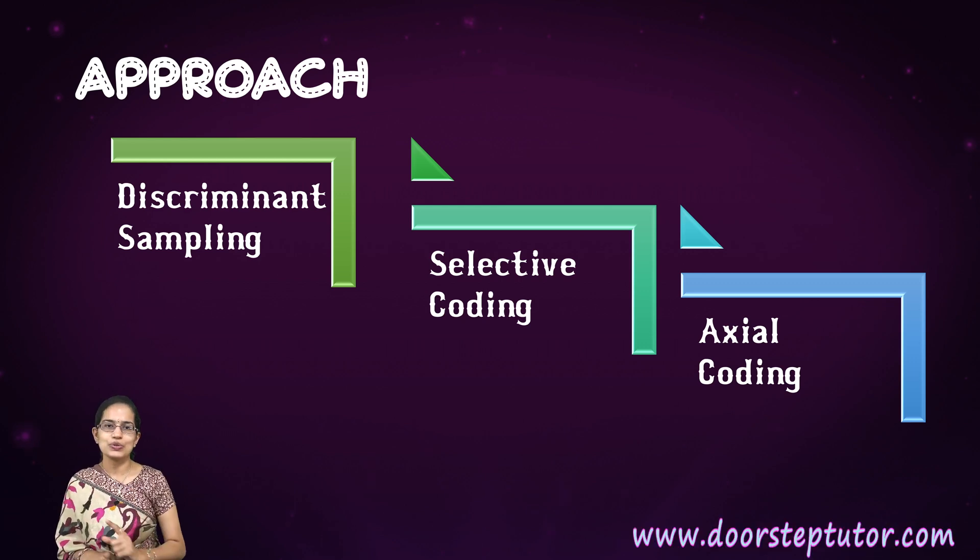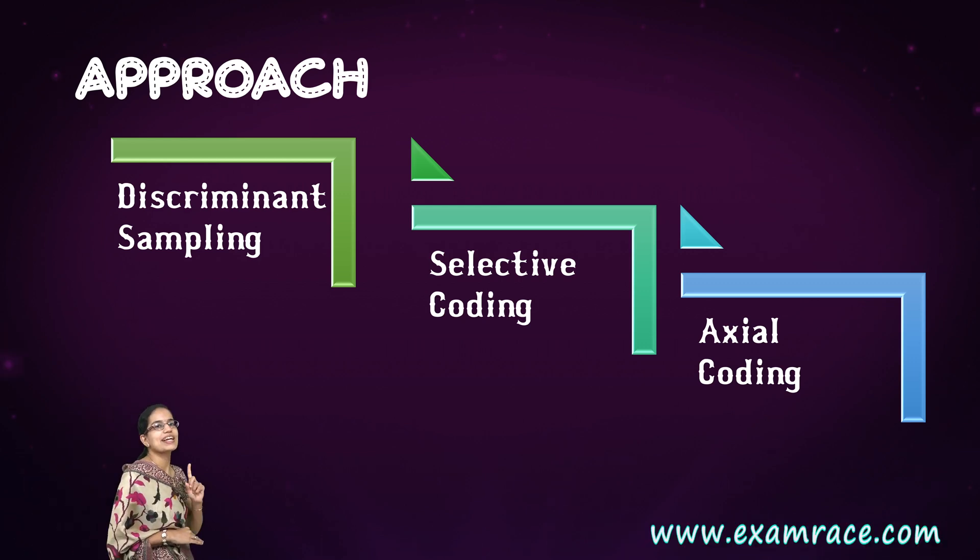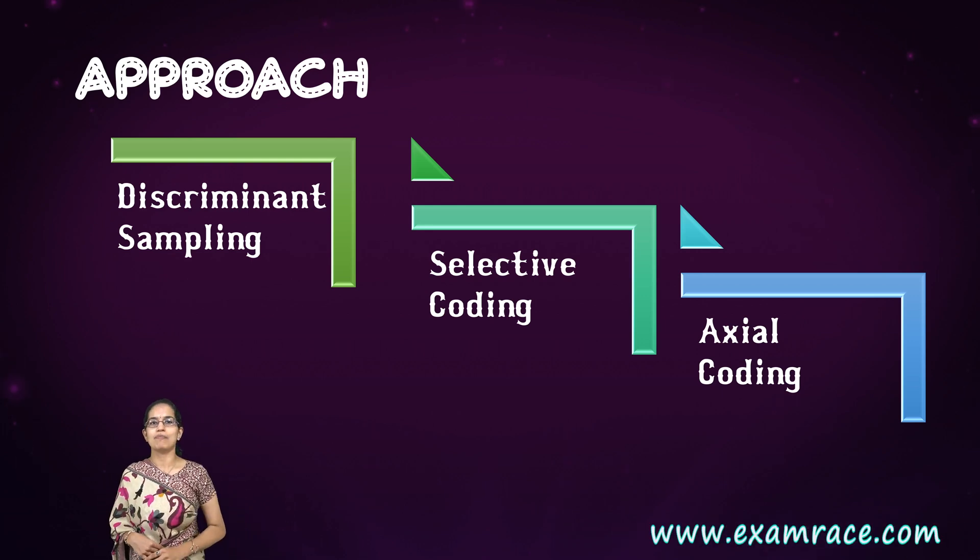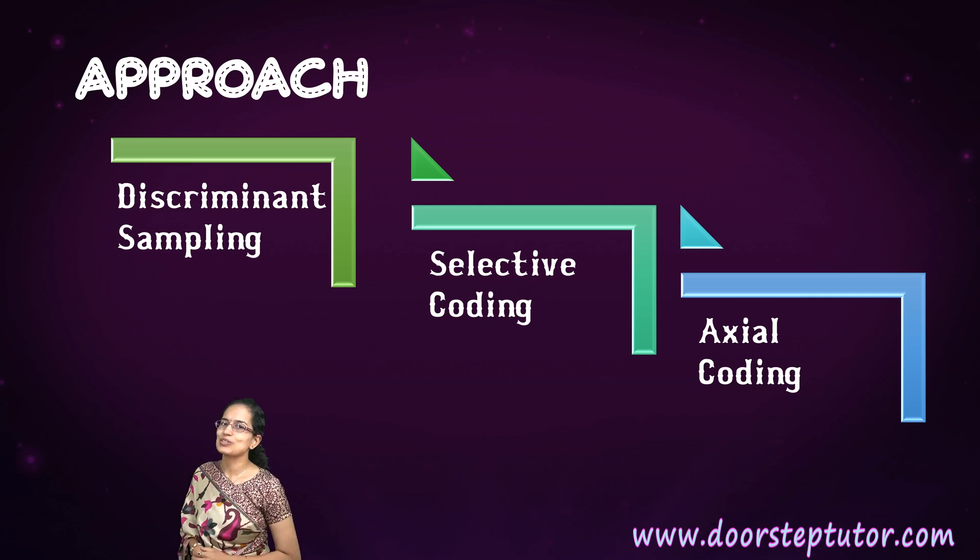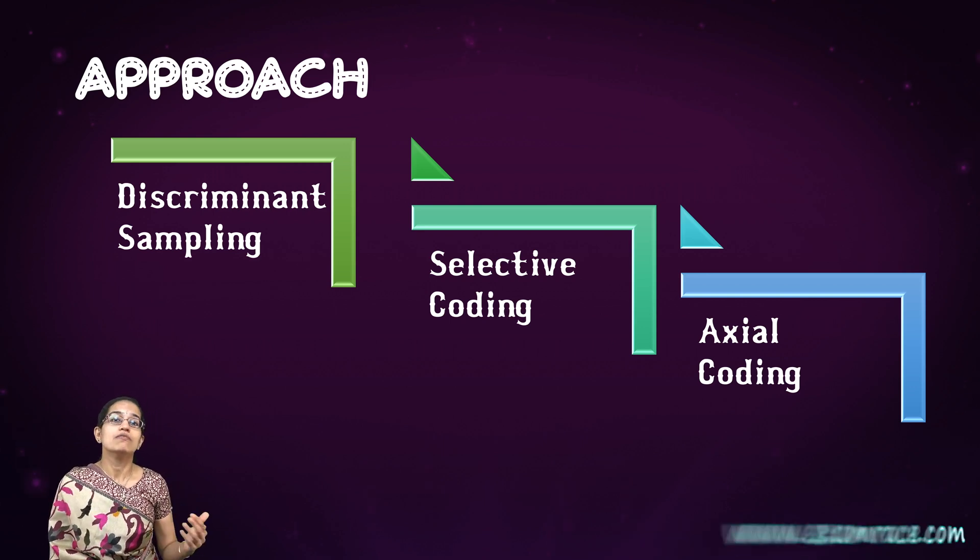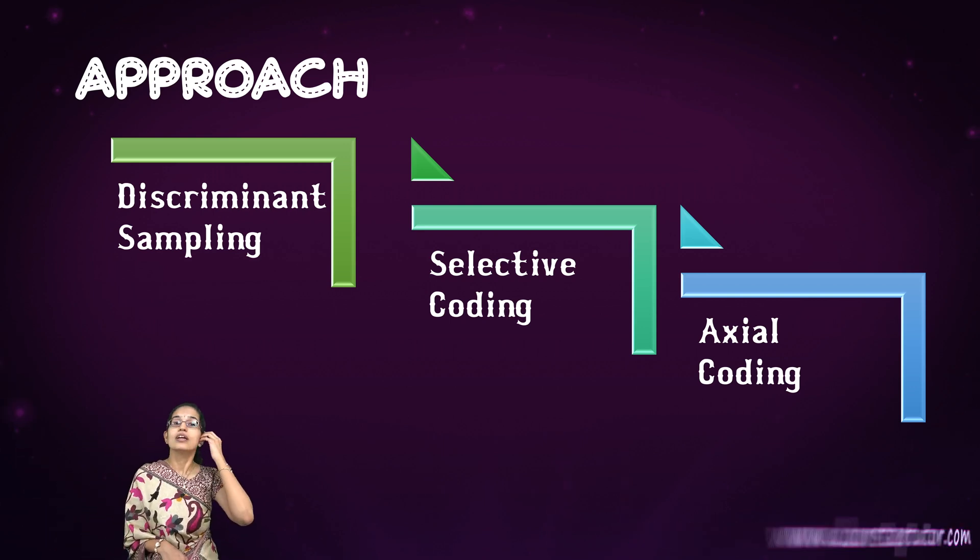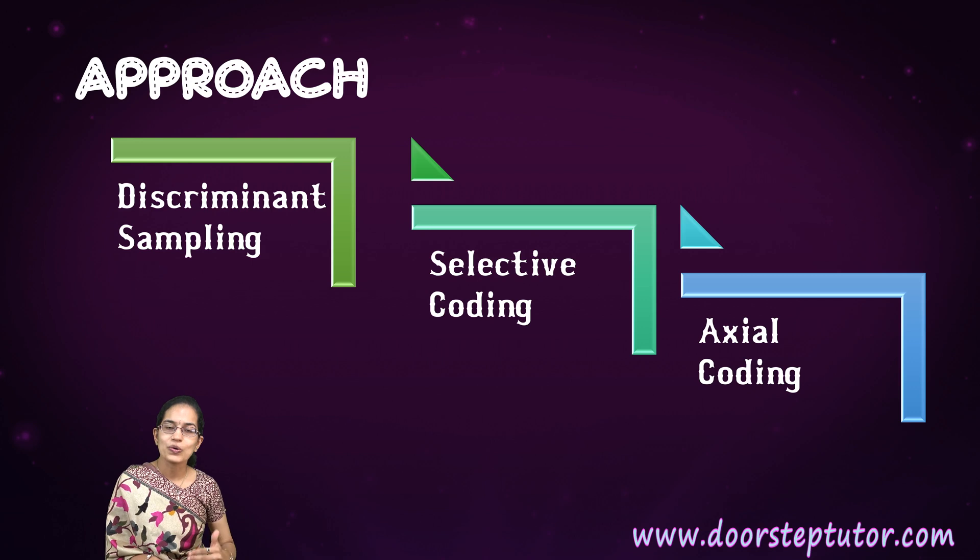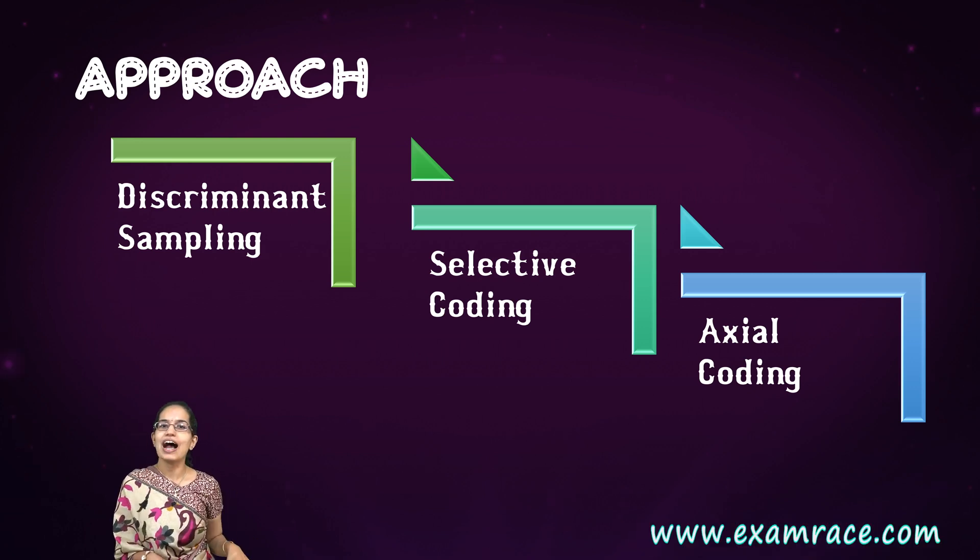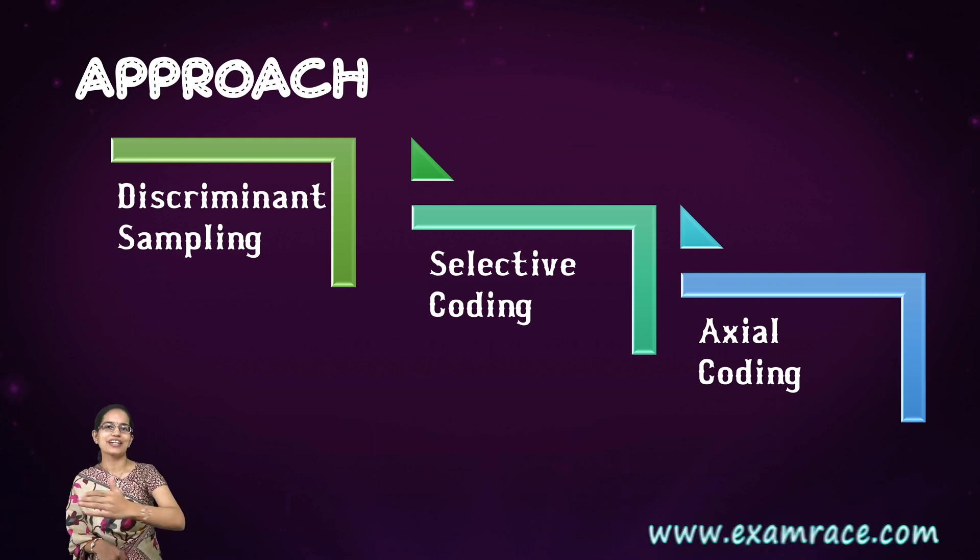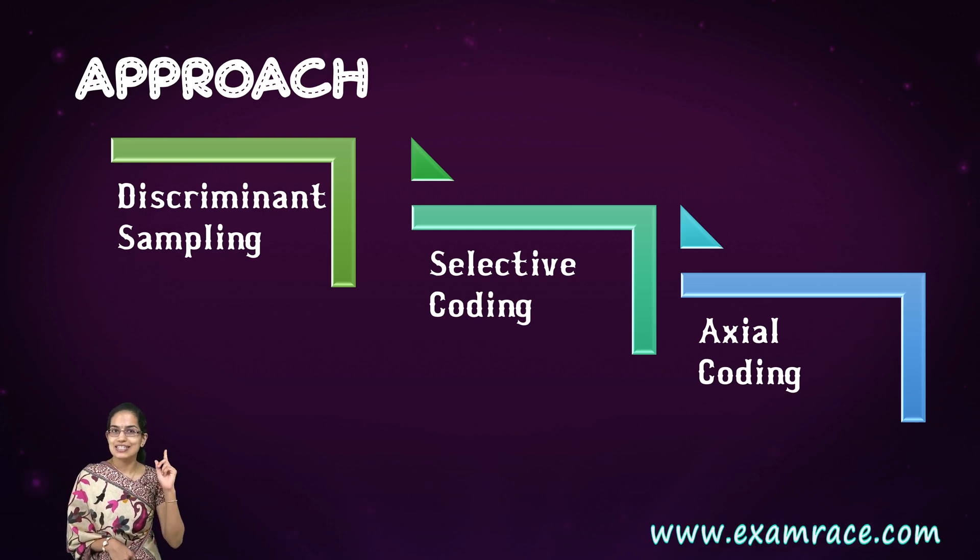Under grounded theory approach, we have the open coding, axial coding, and selective coding that comes very important. We start with theoretical sampling and we come on to discriminant sampling. Those are some of the most important things that you need to remember under grounded theory approach. Most common questions would be which of the following is part of grounded theory: memoing, constant comparison, open coding, axial coding, selective coding.